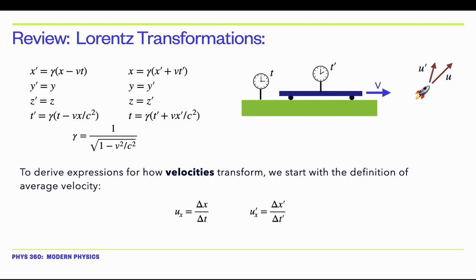We imagine here's the ground frame — we'll call this the O frame — here's the moving platform, we'll call this the O-prime frame. There are two observers and they're each watching a third object move through space. The person on the ground frame will see that this object has a velocity u; the person on the moving platform will see it has a velocity u-prime.